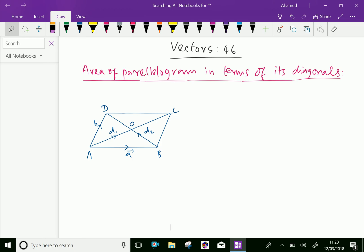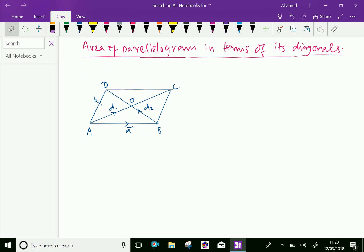Look at this figure. A figure ABCD is a parallelogram in which AC and BD are its diagonals and intersect at O.